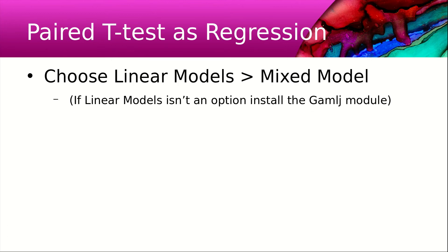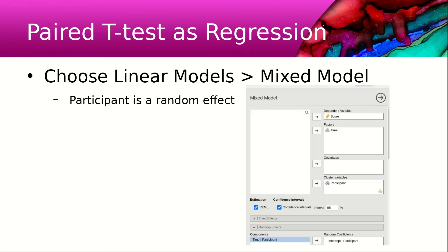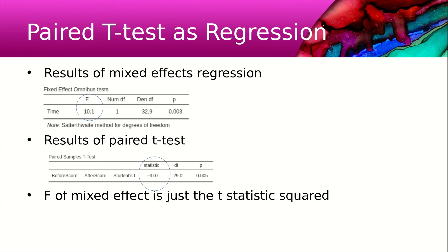To do this in Jamovi, choose linear models, mixed models. If linear models isn't an option, you need to install the Gamal J module. Put in participant as a random effect since participants give more than one measure. The results of our mixed effects regression are significant.